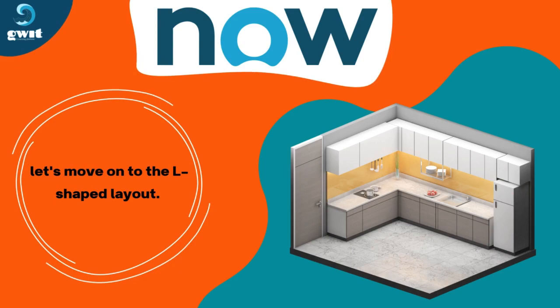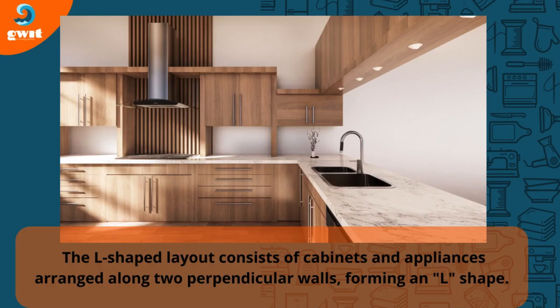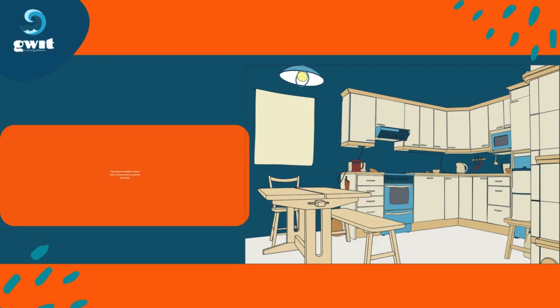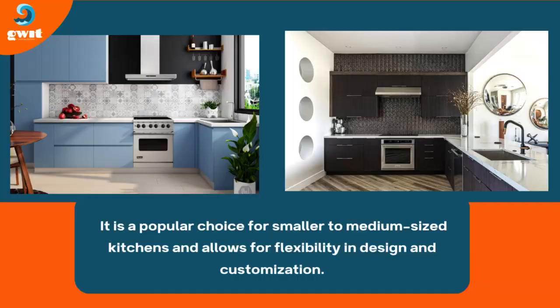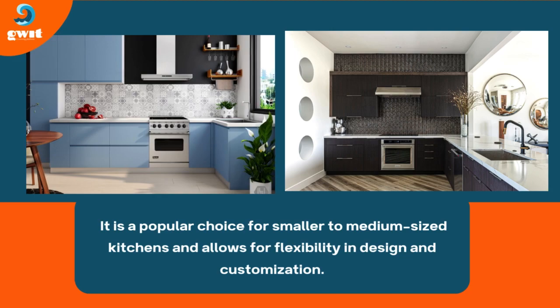Now, let's move on to the L-shaped layout. The L-shaped layout consists of cabinets and appliances arranged along two perpendicular walls, forming an L-shape. This layout maximizes corner space and promotes a smooth workflow. It is a popular choice for smaller to medium-sized kitchens and allows for flexibility in design and customization.